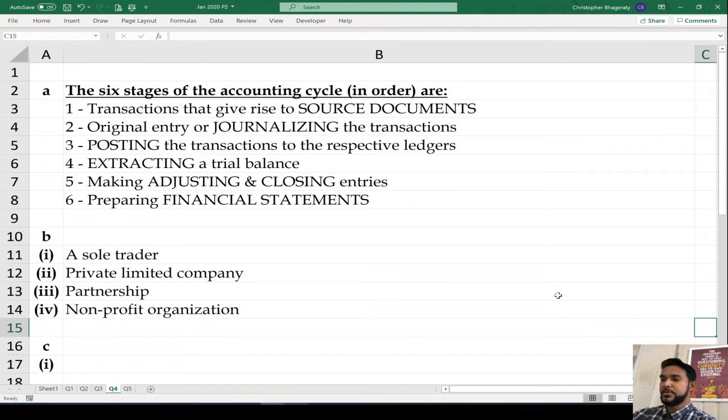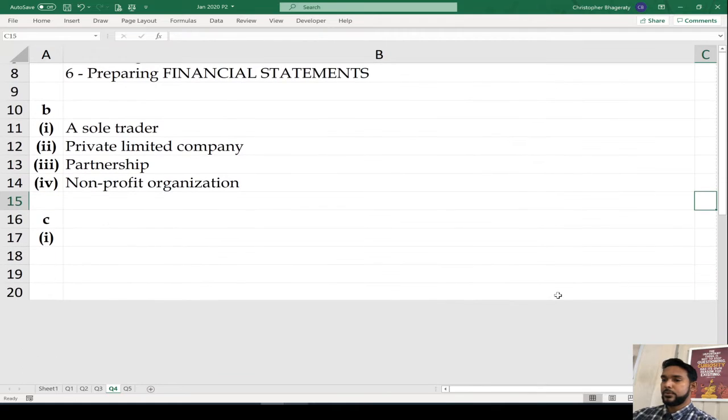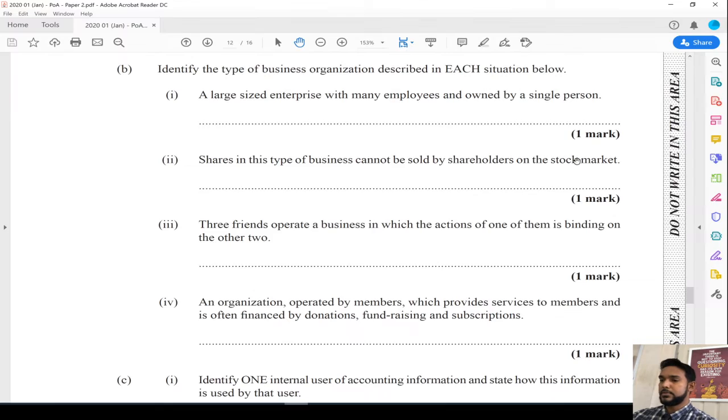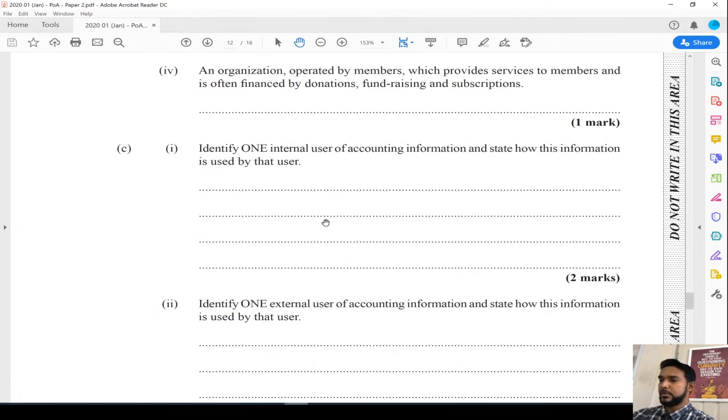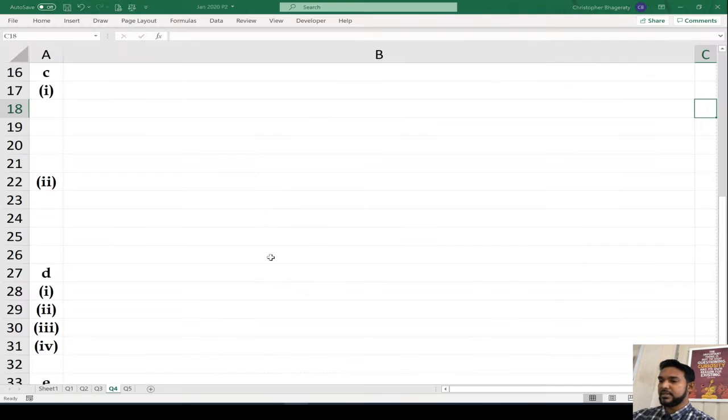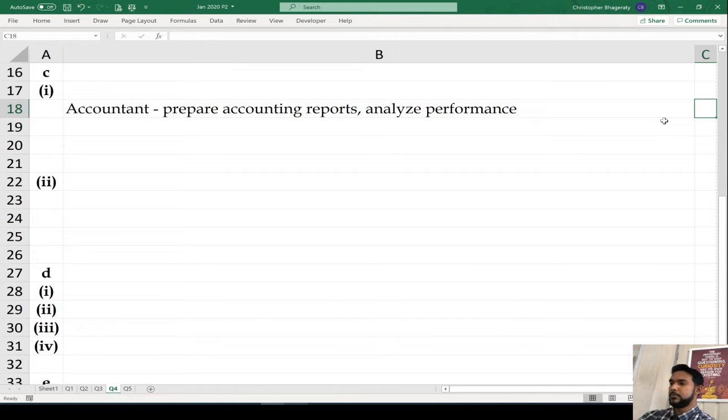Part C: Identify one internal user of accounting information and state how it's used by that user, and identify one external user and show how the information is used. I did four of each because I like to give options to people.